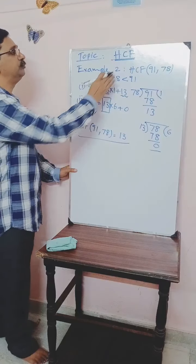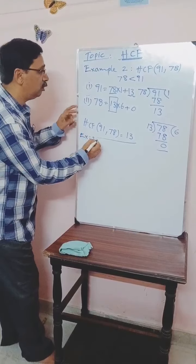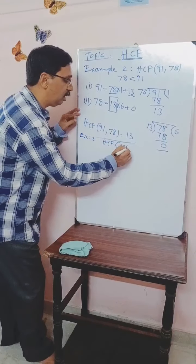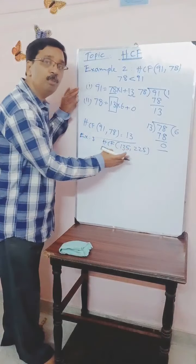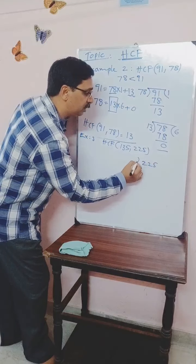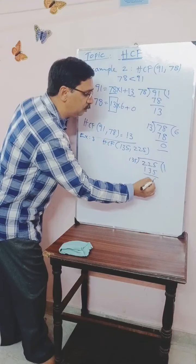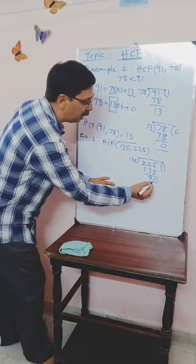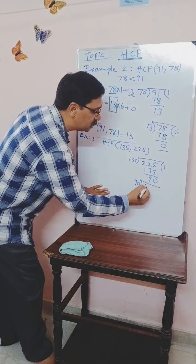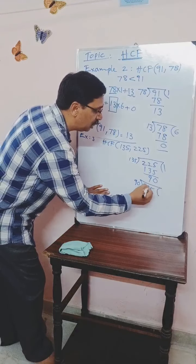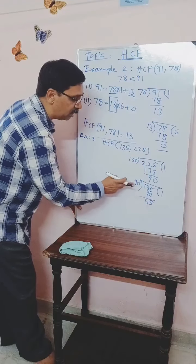Let us try example 3: HCF of 135 and 225. The smaller number is 135, so we divide 225 by 135. Only one time: 135 × 1 = 135, and the remainder is 90. Since 90 is not 0, we divide 135 by 90. Again, only one time: 90 × 1 = 90, and the remainder is 45. Again, the remainder is not 0, so with this remainder we divide the divisor again.